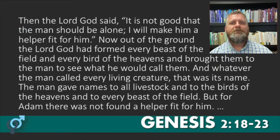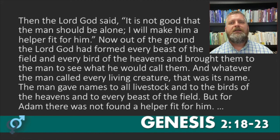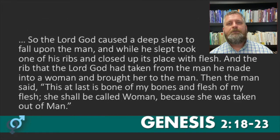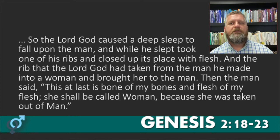Genesis 2:18-23: 'Then the Lord God said, it is not good that man should be alone. I will make him a helper fit for him. Now out of the ground the Lord God had formed every beast of the field and every bird of the heavens and brought them to man to see what he would call them. Whatever the man called every living creature, that was its name. The man gave names to all livestock, birds, and every beast of the field, but for Adam there was not found a helper fit for him. So the Lord God caused a deep sleep to fall upon man, took one of his ribs, and made it into a woman and brought her to the man. Then the man said, this at last is bone of my bones and flesh of my flesh. She shall be called woman, because she was taken out of man.'